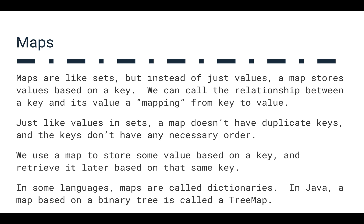We also have maps. Maps are like sets, but instead of just values, a map stores values based on a key. We call the relationship between a key and its value a mapping. A lot of times we want to look something up using an ID or something easier to reference than a whole complex object. Just like values in sets, a map doesn't have duplicate keys, and the keys don't have any necessary order. If you use Python, you're probably familiar with dictionaries — that's basically just a map. In Java, we have a TreeMap based on a tree structure, in the java.util package.